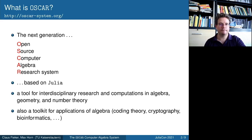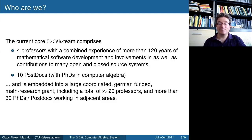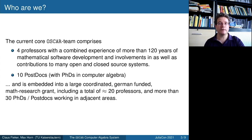Who are the people behind OSCAR? Lots of people are contributing to various parts of OSCAR, but the core team currently comprises four professors working in computer algebra with lots of experience writing and developing mathematical software — both open source and closed source. In addition we have 10 postdocs with PhDs in computer algebra, many of them also with years of experience. That's just the core team; there are lots of contributors also outside of academia and we are very grateful to all of them.